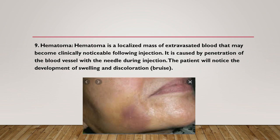Another complication is hematoma — a localized mass of extravasated blood that may become clinically noticeable following injection. This occurs by penetration of a blood vessel with the needle during injection. Blood vessels most commonly associated with intraoral hematoma include the pterygoid venous plexus, the posterior superior alveolar vessels, the inferior alveolar vessels in the pterygomandibular space, the mental vessels, and the infraorbital vessels. Prevention: learn anatomical landmarks and injection techniques, and avoid relocating the needle to different sides inside the tissue. Management: if visible immediately following injection, apply direct pressure. Once bleeding has stopped, inform the patient and evaluate possible ways of continuing treatment.